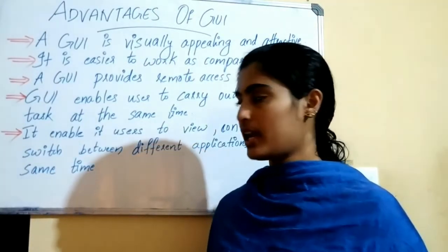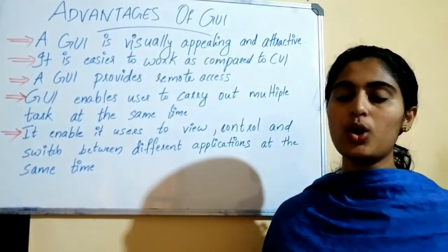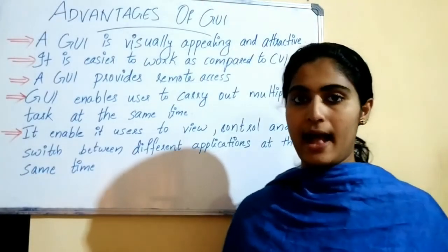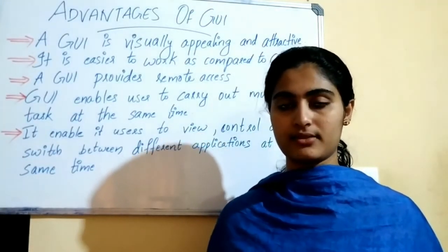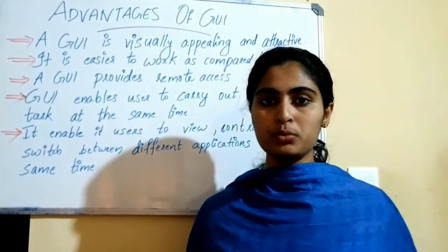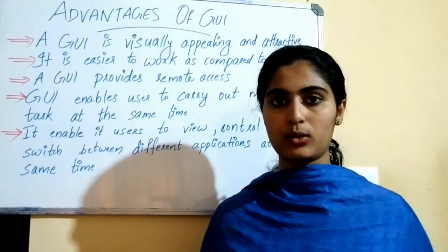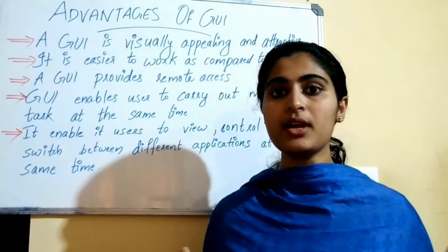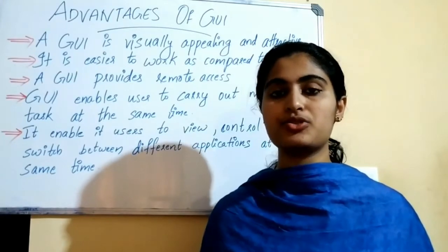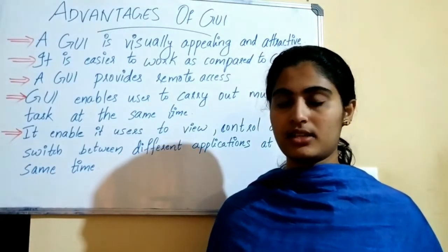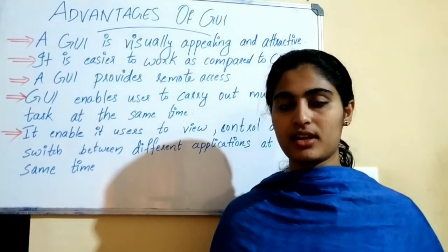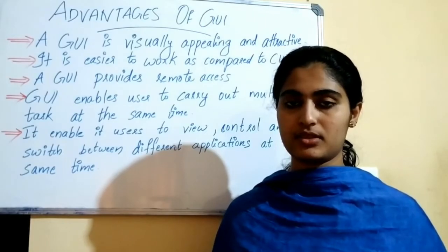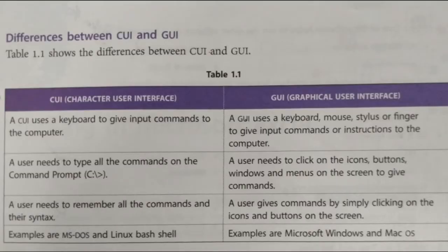The fifth advantage is that GUI enables users to view, control, and switch between different applications at the same time. A user can open MS Word and type, open YouTube and download a movie, open a calculator and calculate — all simultaneously, switching from one application to another. These are the advantages of GUI.